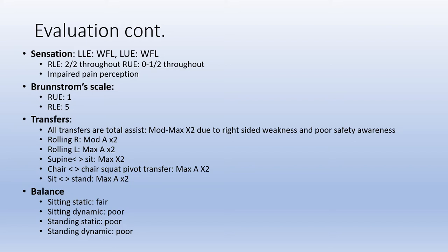Sensation on the left side was within functional limits. On the right lower extremity, she did have sensation throughout; however, the right upper extremity was mostly 0 to 1 in some places. She also has impaired pain perception, which is consistent with insular-affected strokes. She would multiple times have bleeding on her abdomen from picking at scabs with no idea until it was bleeding through her clothes. On the Brunnstrom scale, the right upper extremity is classified as a 1 and the right lower extremity as a 5.